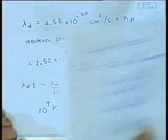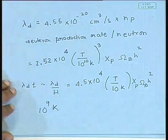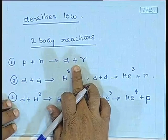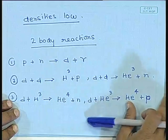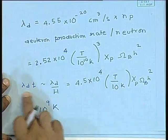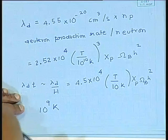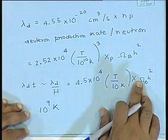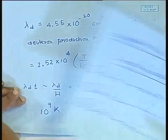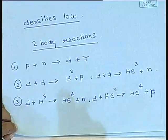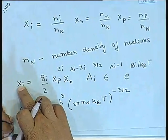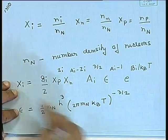The first reaction — formation of deuterium — is in thermal equilibrium well below 10^9 K, as we can see from this. So this reaction is in equilibrium; the formation of deuterium is in equilibrium. We have the expression for the deuterium abundance, and we just plug in the numbers for the deuteron nuclei — the triplet state, atomic number — all known.